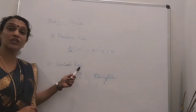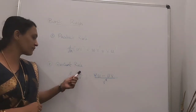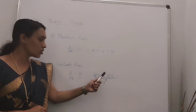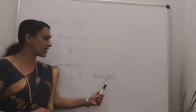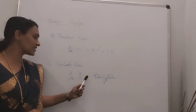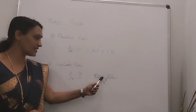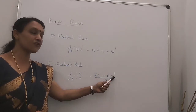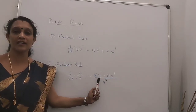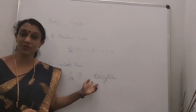Now the second rule is the quotient rule. When the function is of the form u divided by v, d by dx of u by v is equal to v into u dash minus u into v dash, whole divided by v squared. In words: denominator into derivative of numerator minus numerator into derivative of denominator, whole divided by denominator squared. Keep in mind these two important rules.